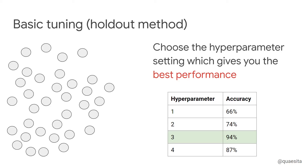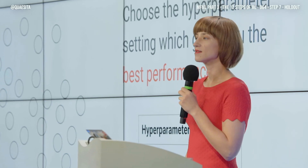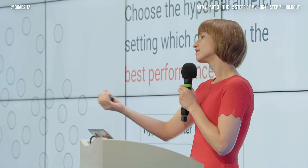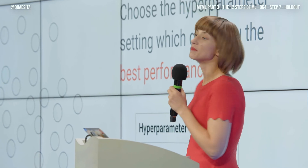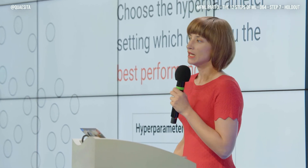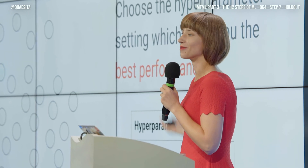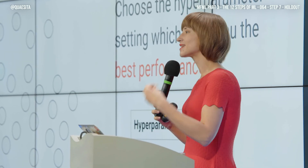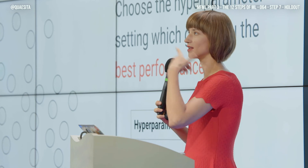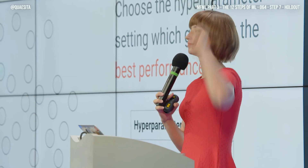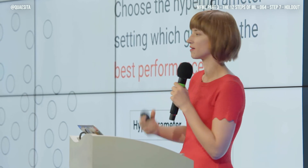Do you have a preference? I sure do. It looks to me like this third setting here is giving me the best performance, at least in training, and so that is the one I'm going to prefer. It's not ideal — we know there are a whole lot of issues with taking our results in training seriously — but at least this gives us a principled choice rather than having to guess or use our favorite number.